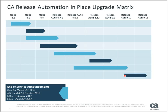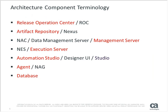We're going to talk a little bit about terminology to make sure we're all on the same page. The ROC is the Release Operation Center — the web UI. There's the Nexus repository. Most people still call the data manager the NAC; officially it's the data manager. So management server, data manager, NAC — those are basically all the same thing. NES is our execution servers. In the UI we have the Automation Studio UI — ASAP — the designer UI in the studio, and then agents and databases.